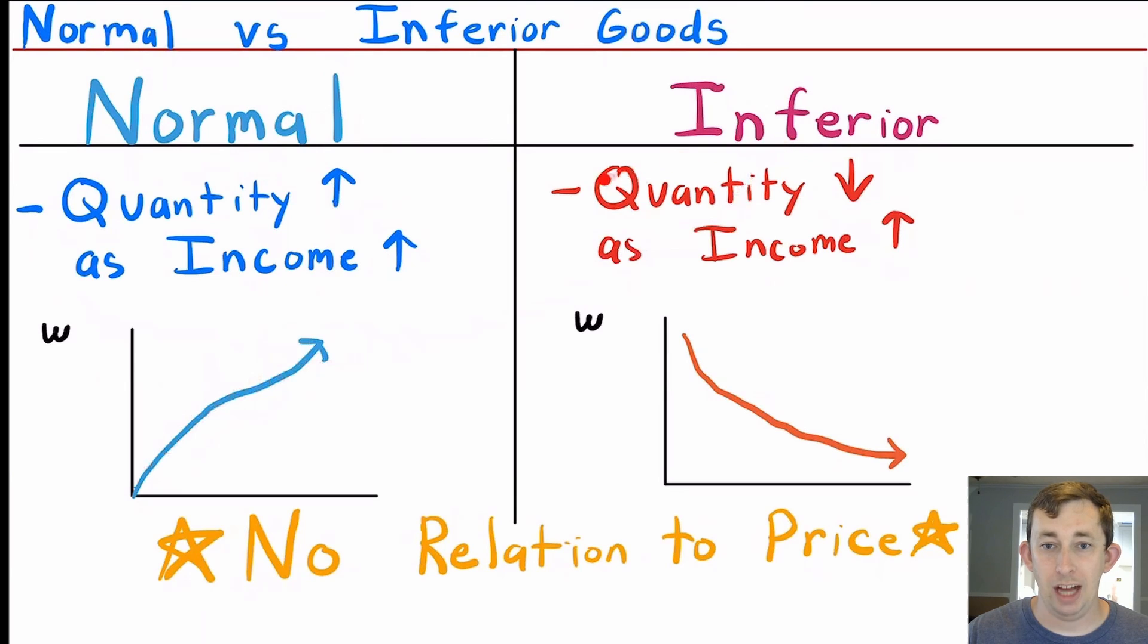If it's an inferior good, it's the opposite. That means the quantity of that good in my optimal bundle is going down as my income goes up. So my wealth expansion might look something like this where it's a negative slope with respect to wealth.